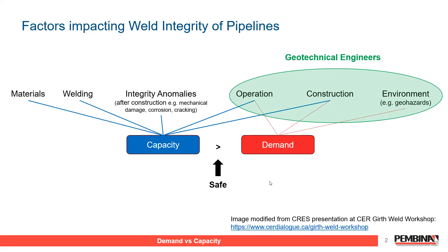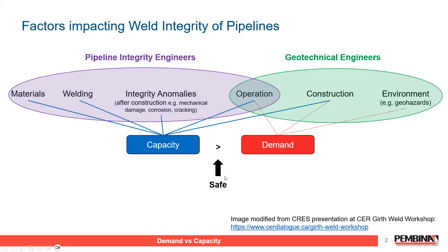As geotechnical engineers, you're studying slopes and movements — you're looking at the demand side of what the pipeline needs to withstand, both from a subsidence perspective and a geohazard perspective. As an integrity engineer, we focus more on the capacity side: welding, materials, operations, and integrity anomalies. Take these pesky girth welds that have been causing issues with an increased number of failures in the last 10 to 15 years.